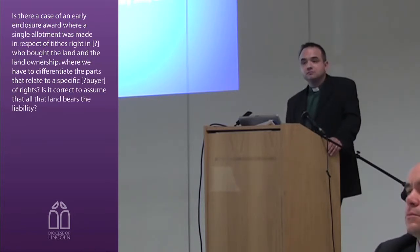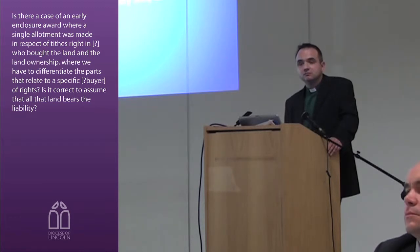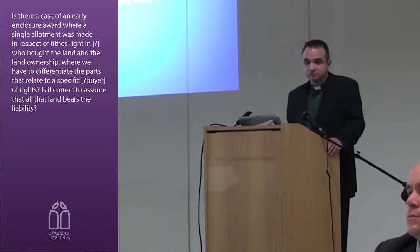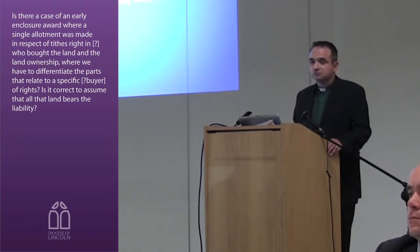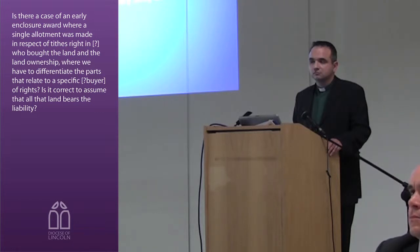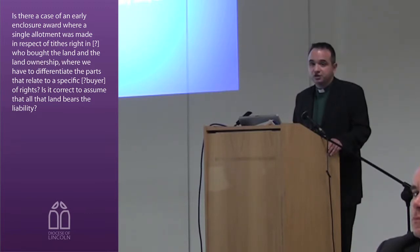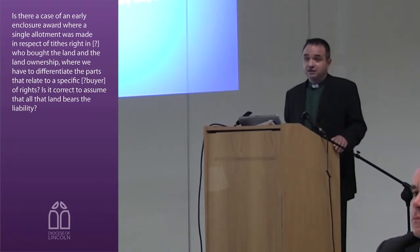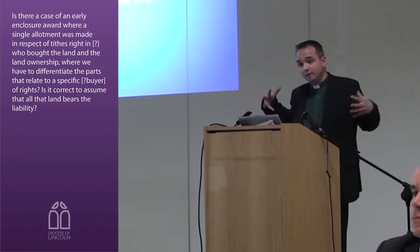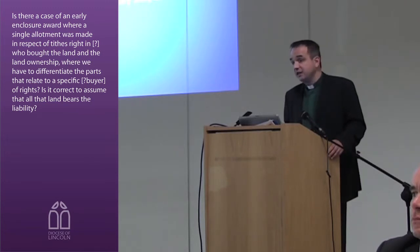In the case of an early enclosure award where a single allotment was made in respect of tithes — right of the soil for the land and land ownership — we have differentiated the parts made for specific prior rights. Is it correct to receive all of the land's liability? Yes, in that case, if it specifically mentions the impropriatorial tithes, if it specifically mentions the whole amount for the chancel. If it doesn't mention it, as in my case, you can't prove it, but in your case the whole of it — because it's all merged together — would be liability for the chancel. That would be my assumption and I'm sure that is correct.